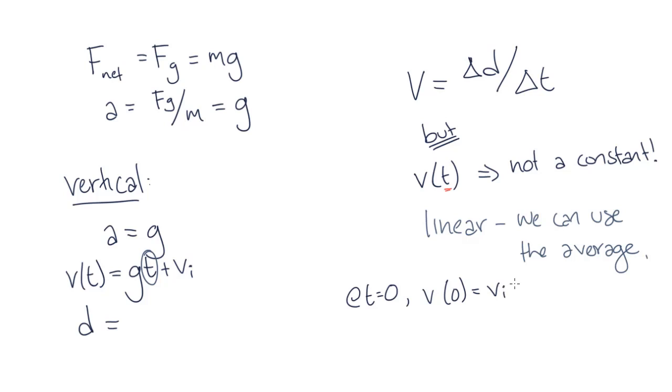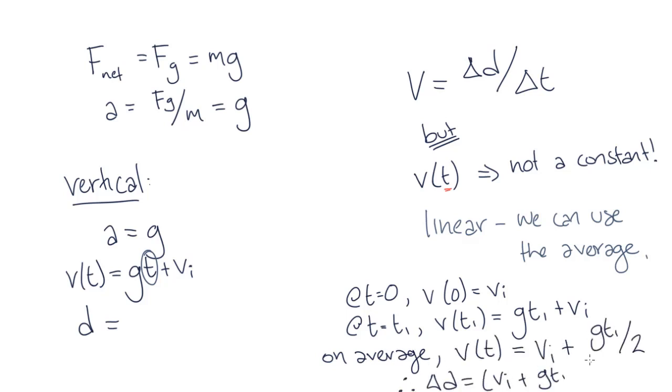If our initial velocity is zero, and our final velocity is gt, then we know that our average velocity will be equal to gt on 2. So to find our displacement at time t, we multiply this by t. And that gives us our displacement of gt squared on 2.